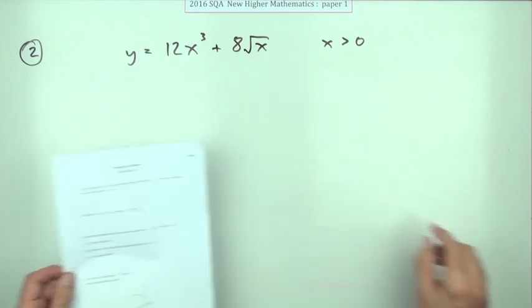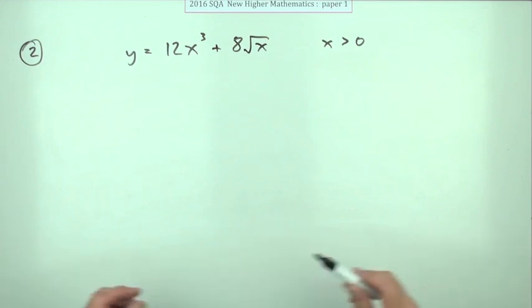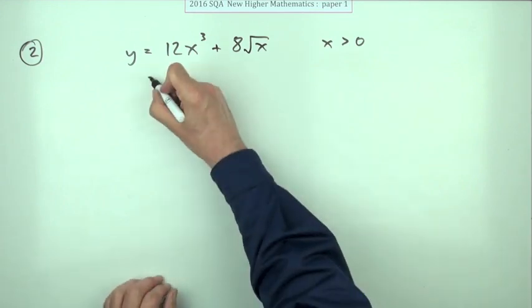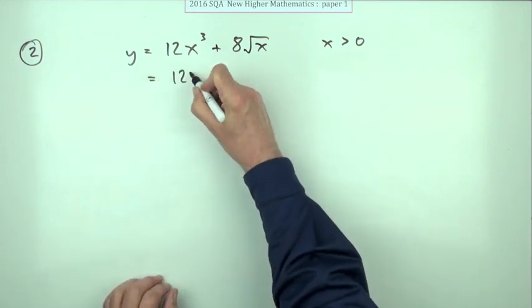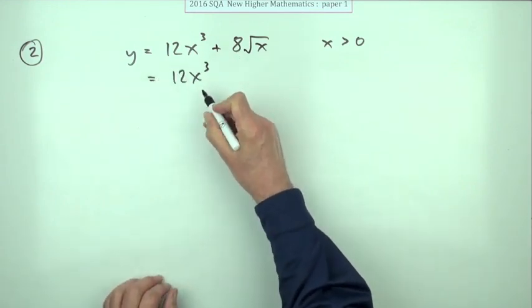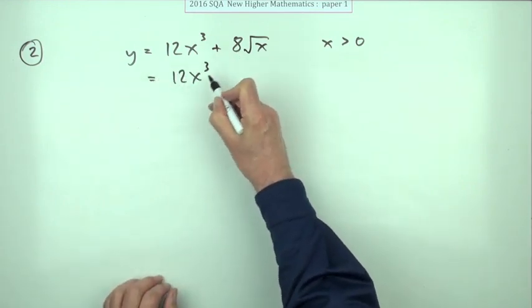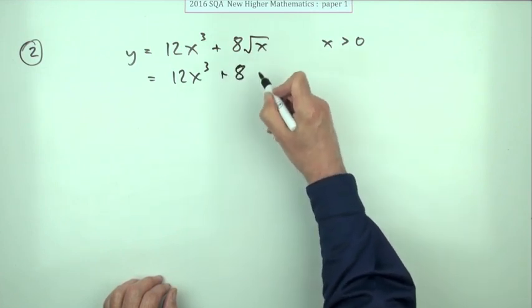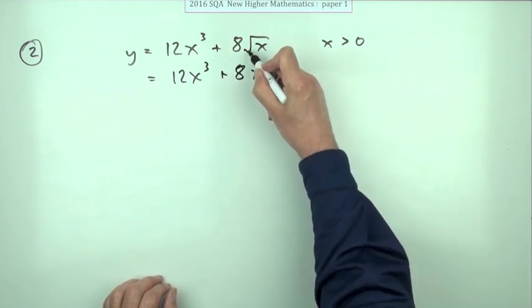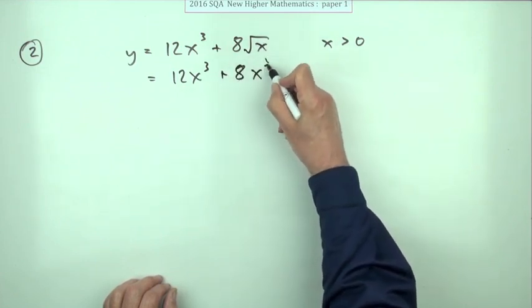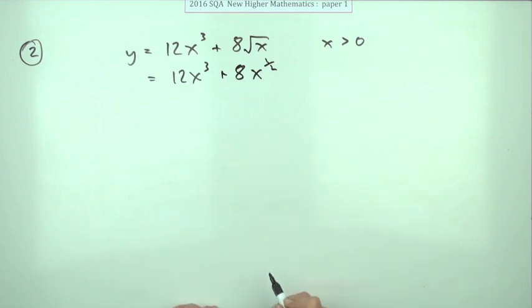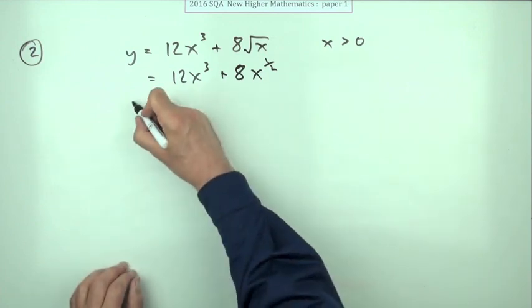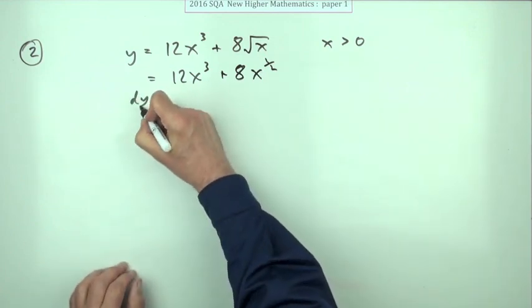A little bit fiddly to undo, but that's easily done. That term is fine because you've got the coefficient and the power in index form. You don't have that here — you'll have to rewrite the square root as a power of a half. Now it's ready to go.